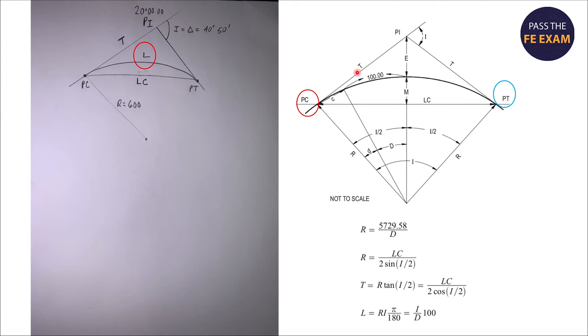First of all, we want to find the tangent. If we look at the equation for tangent, you need the radius and then the tangent of the deflection angle divided by two. We have what we need to solve that.